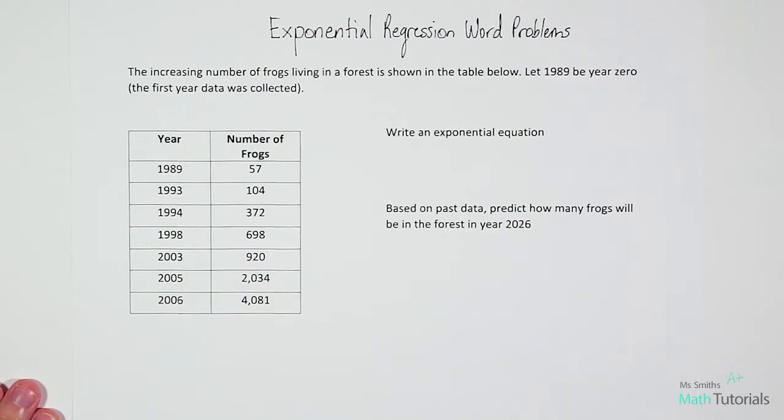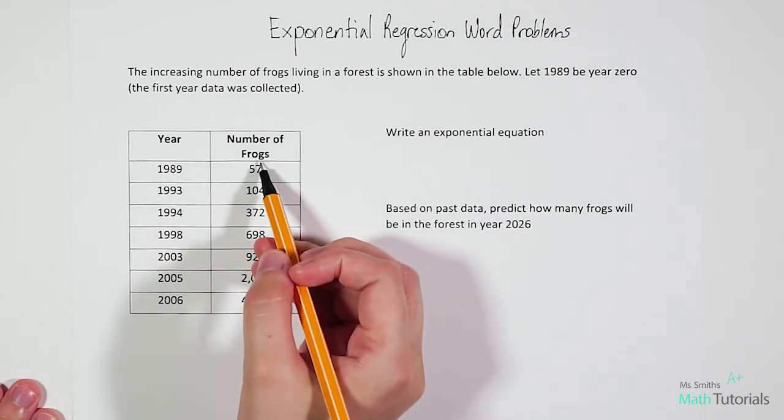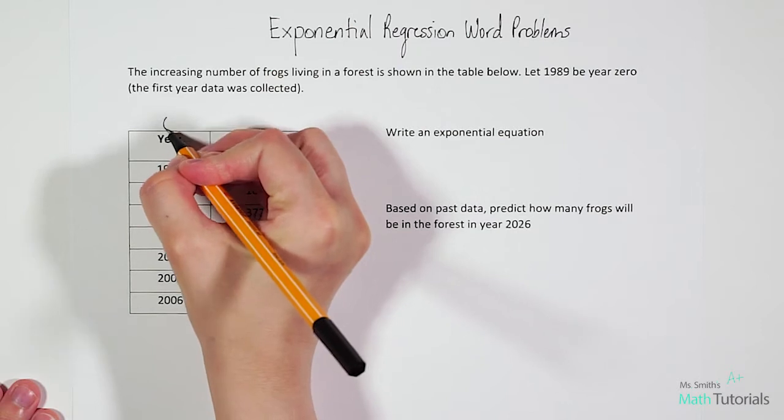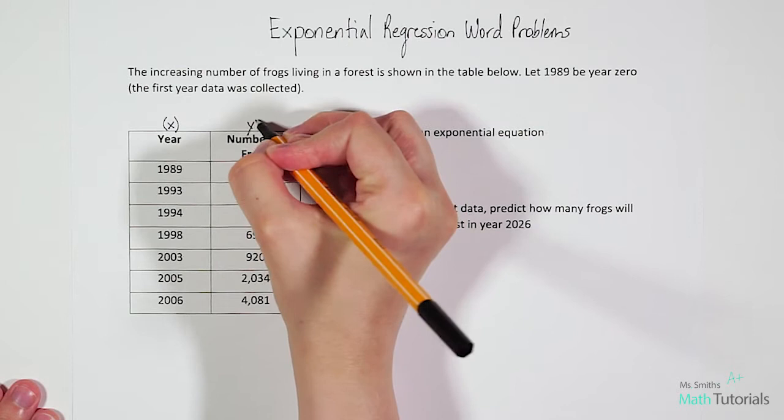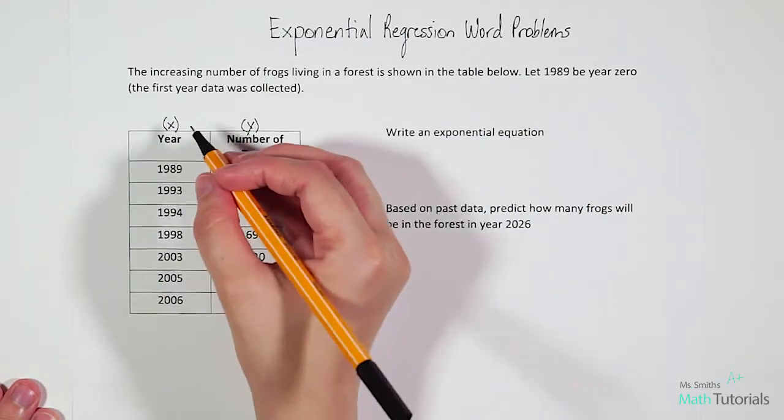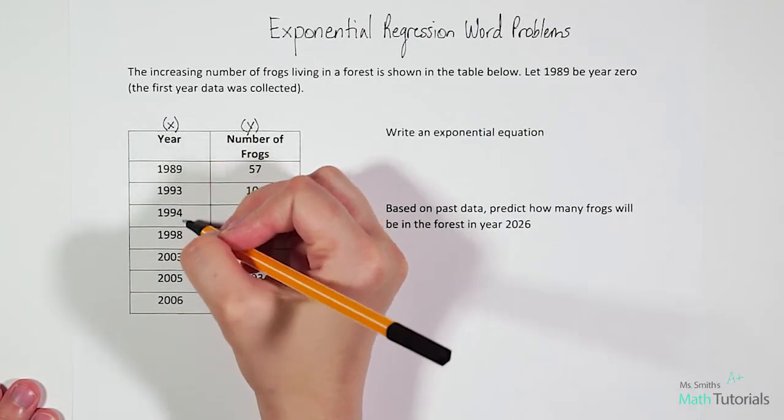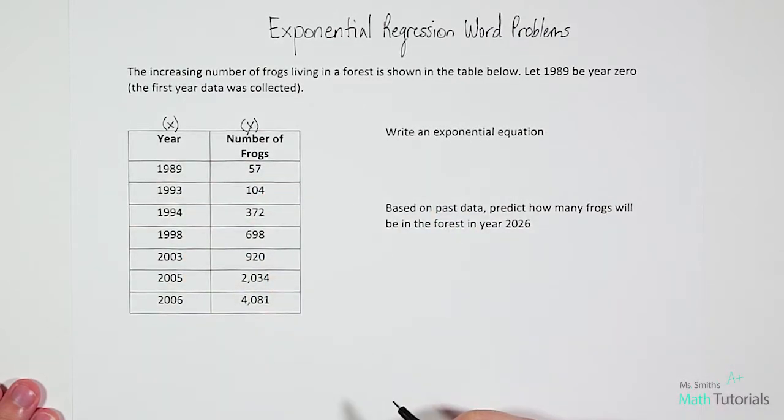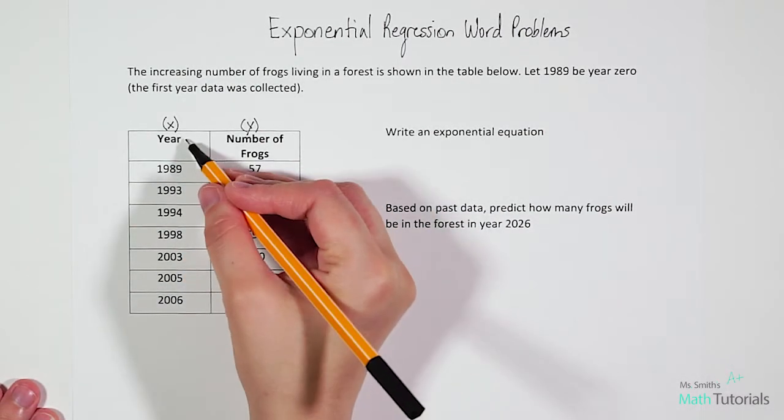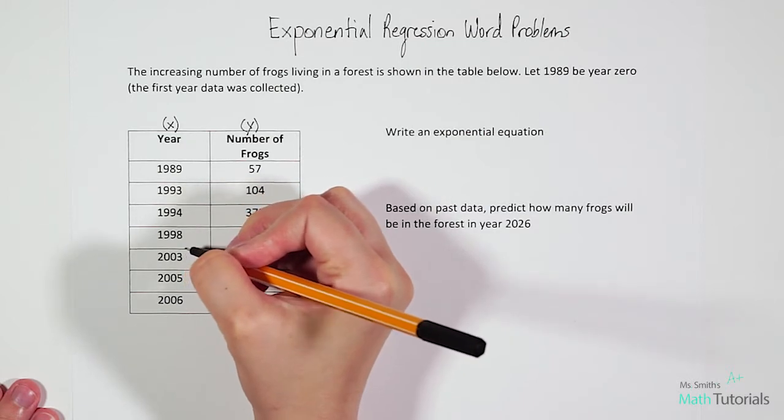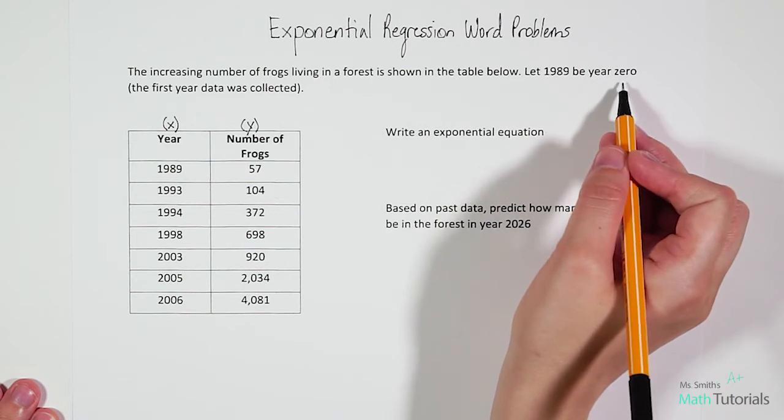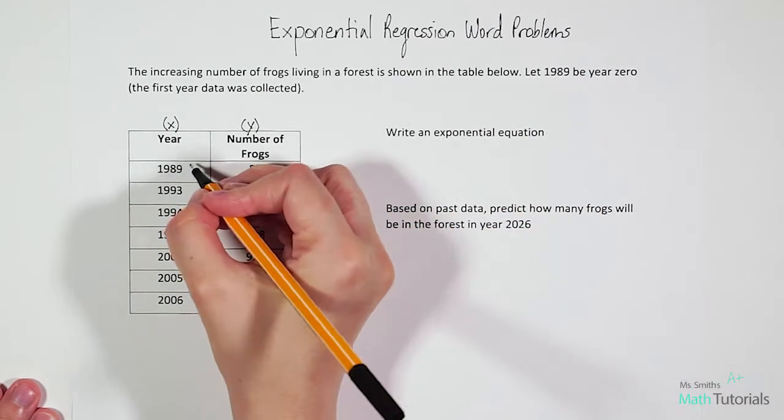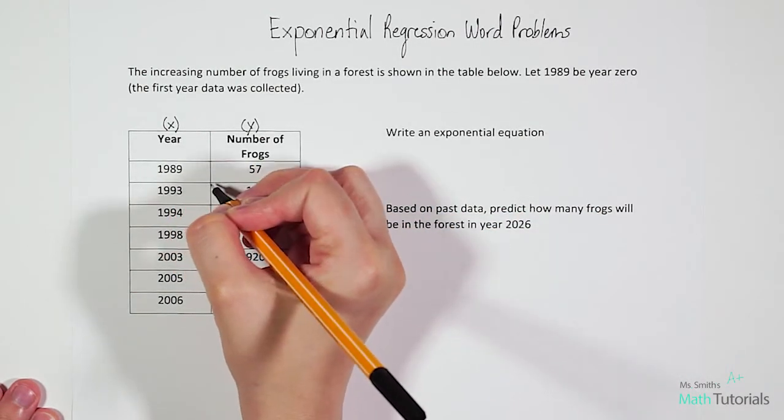One thing that we want to note before we do that is that we've got an x and y table here. Our year is going to be our x, and our number of frogs is going to be our y. We can't put a year value into our data set. We need to translate to the calculator what those years actually represent. Like we said in the problem, let 1989 be year zero because that was our first year data was collected.